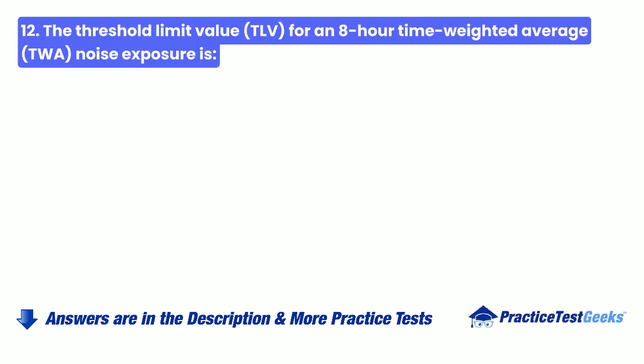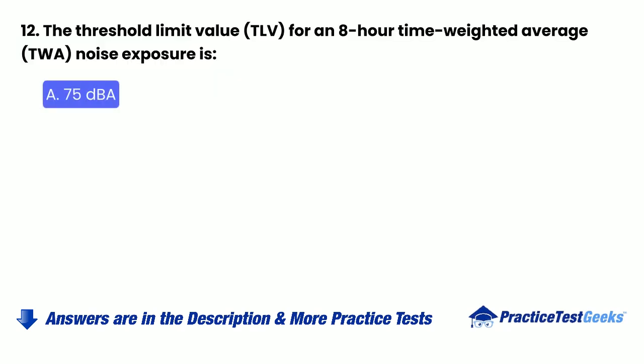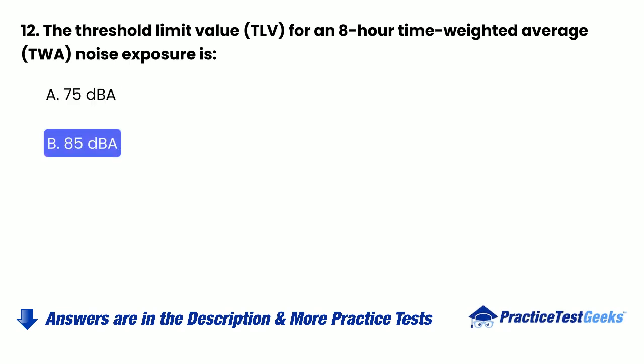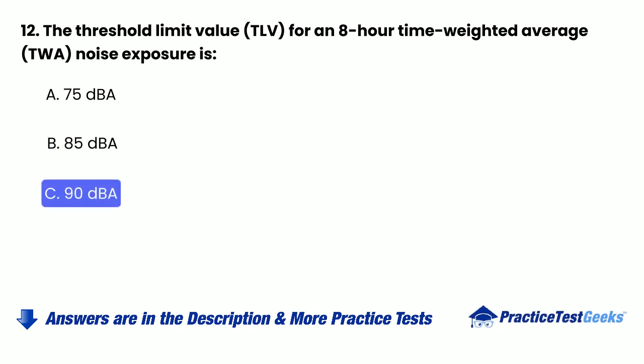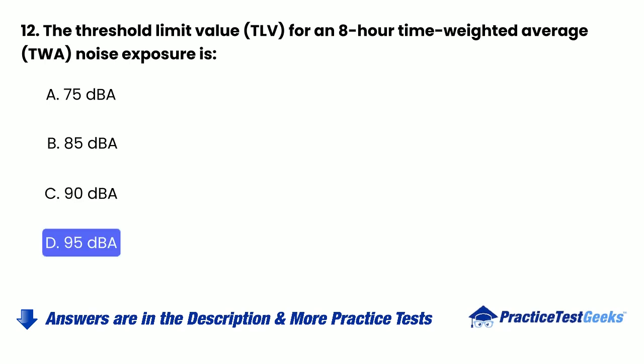Question 12: The threshold limit value (TLV) for an 8-hour time-weighted average (TWA) noise exposure is: A. 75 decibel A-weighted. B. 85 decibel A-weighted. C. 90 decibel A-weighted. D. 95 decibel A-weighted.